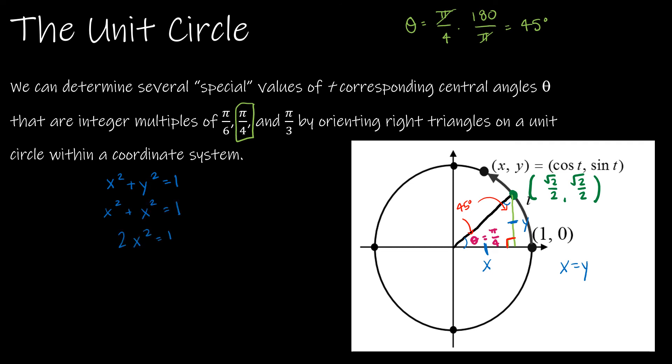I'm going to replace y squared with x squared because they are equal, which gives me 2x squared is equal to 1, x squared is equal to 1 half, x is equal to the square root of 1, which is 1, over the square root of 2.